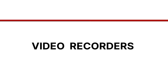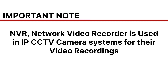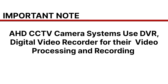Let's now compare their video recorders. Please note that the recording system for IP CCTV systems is called an NVR, that is Network Video Recorder, whilst the recorder and video processing system for AHD or analog CCTV systems is called a DVR, that is Digital Video Recorder.